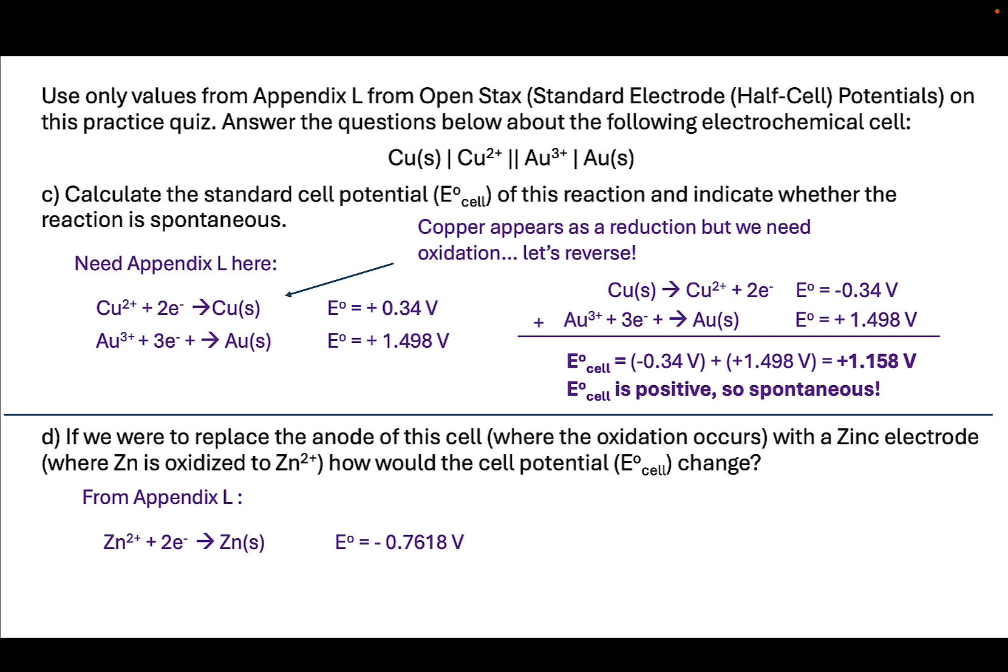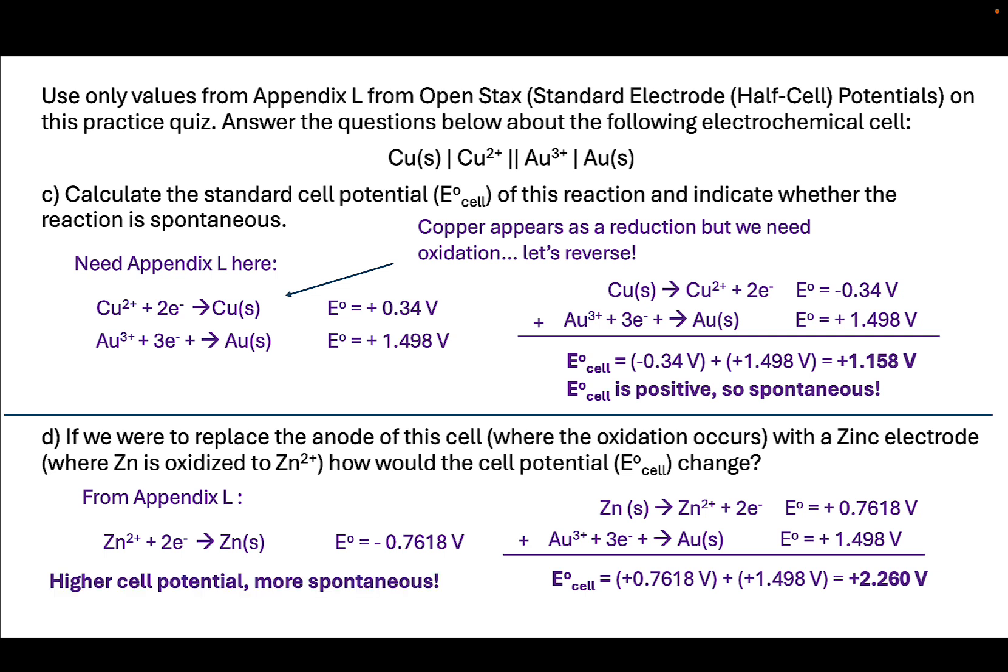From Appendix L for zinc, here we have our half cell reduction potential. In order to get this into a balanced electrochemical cell as the anode, we want to reverse the direction, flipping the sign. We haven't changed gold, so gold is going to be the exact same. When we add together, we see that we get a voltage of positive 2.260 volts. This is higher than what we found for copper, and what this means is that this reaction is more spontaneous.